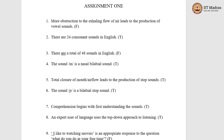The sixth question is: the sound 'per' is a bilabial stop sound. Yes, lips are involved in the production of the sound 'per'. It is a stop sound because this consonant sound 'per' is produced by completely stopping the air flow. Therefore, the statement is true.